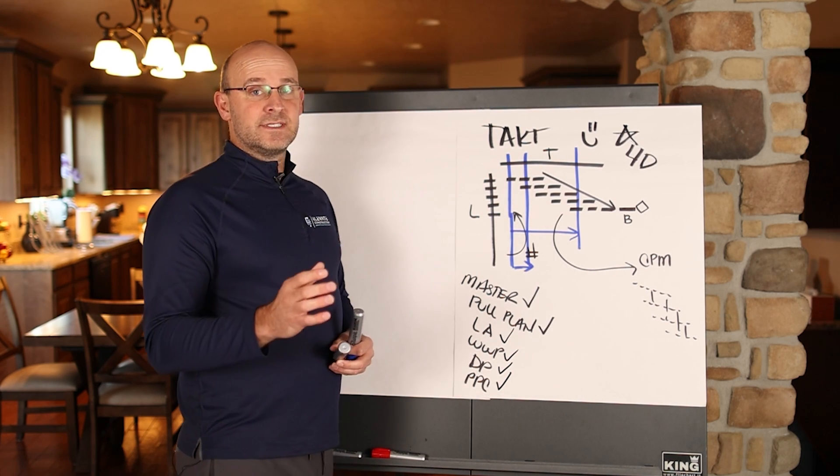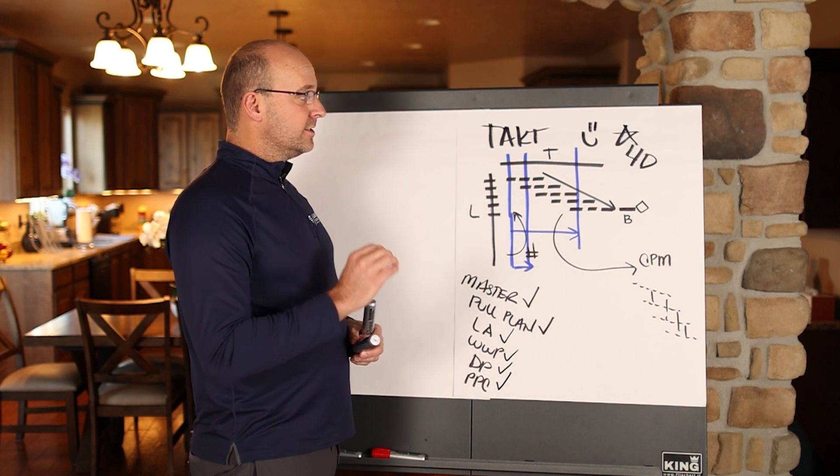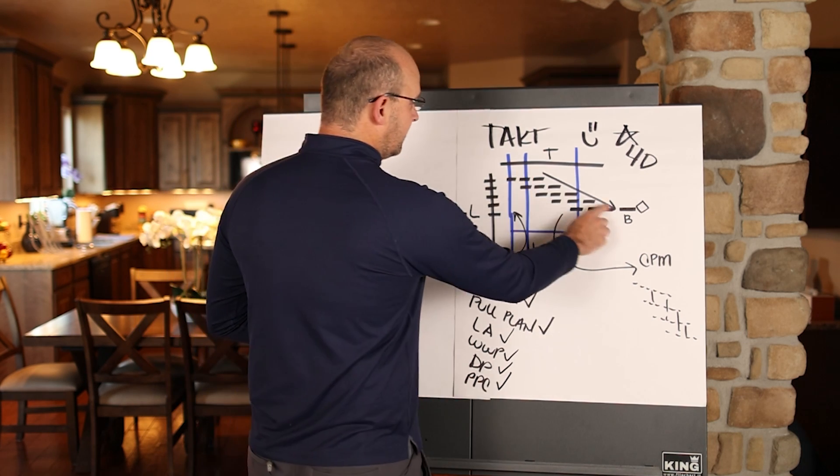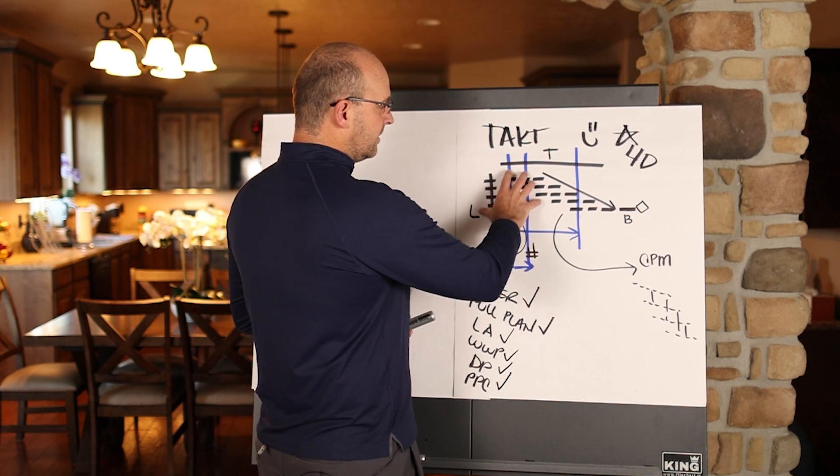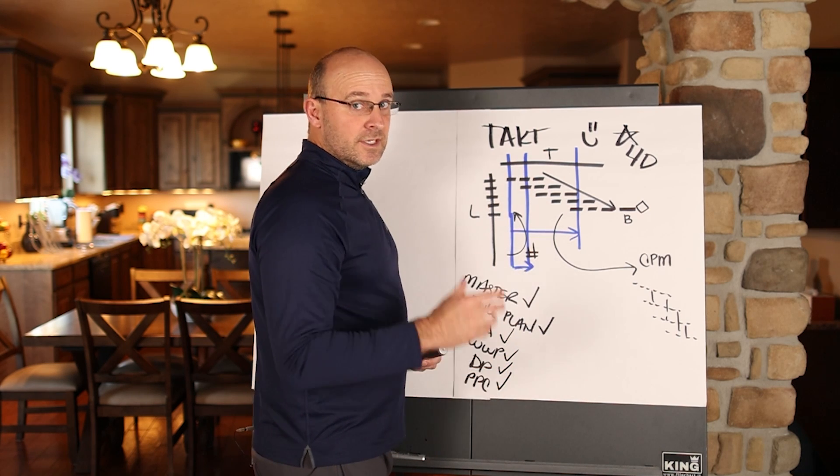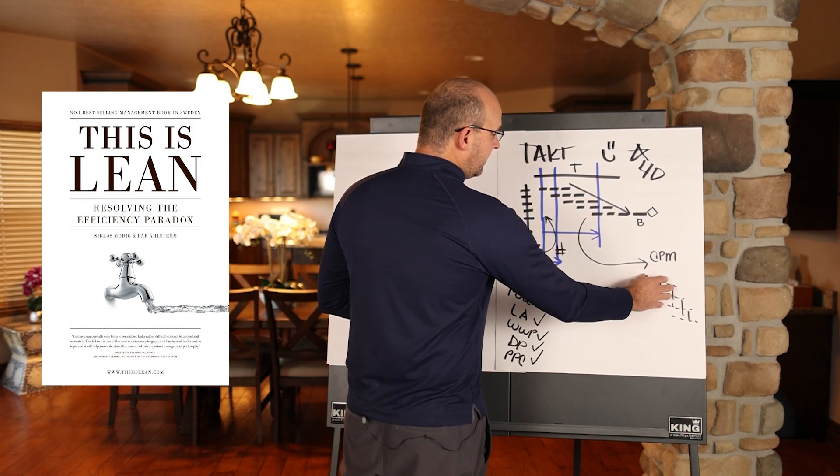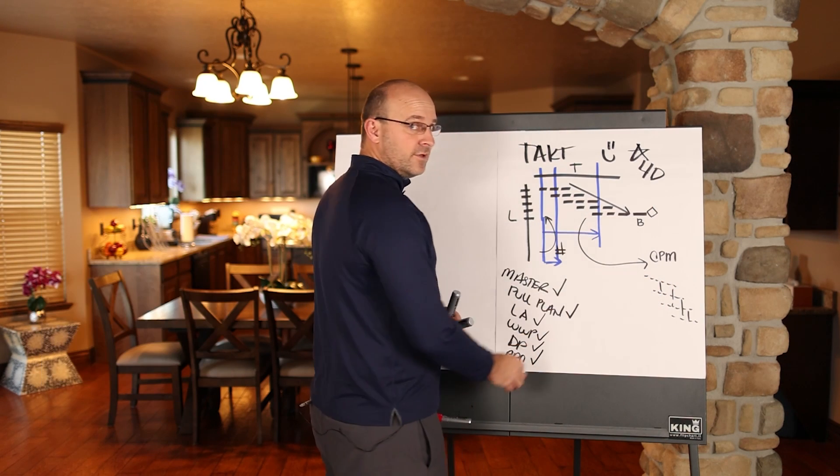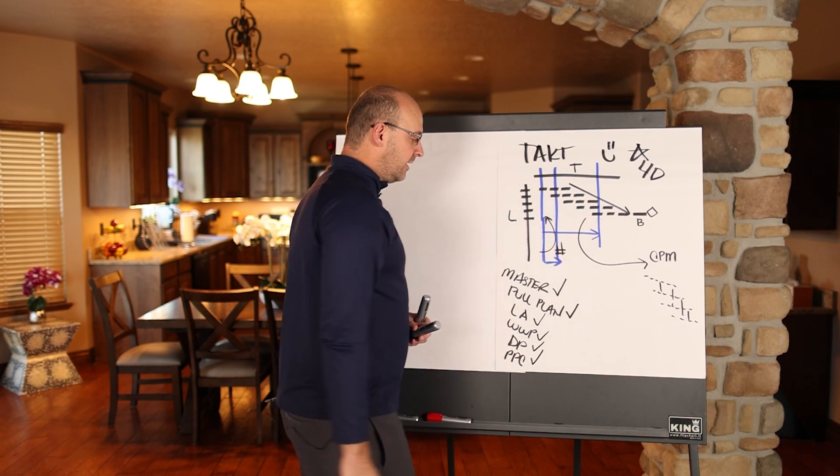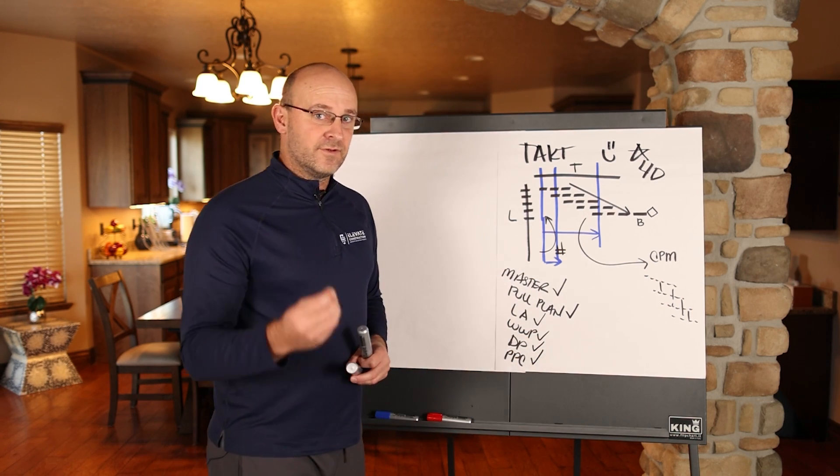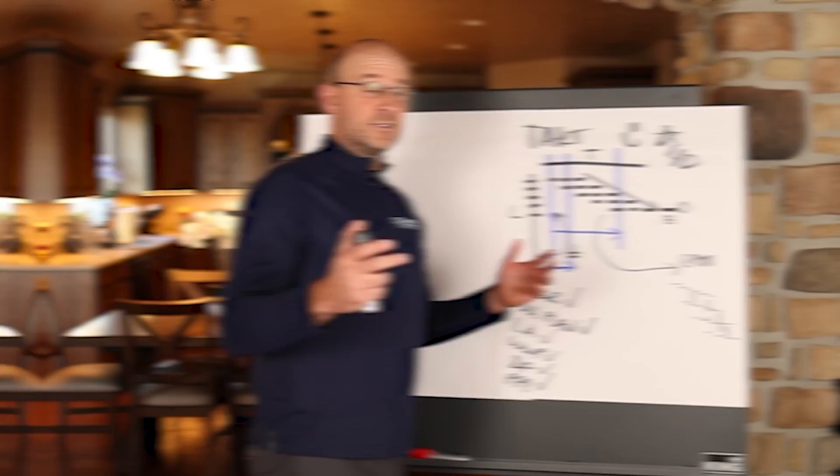So if somebody said, hey, J Money, these are all the different scheduling types. What should I do? I would use takt because you have line of balance, location-based scheduling, ideal flow, just like Nicholas Modig talks in his book, this is lean. You have the CPM export, you have buffers for the project team, and you're able to optimize and go fast. And all of your last planner deliverables filter directly from that. So to me, like this is so cool. You can use this starting tomorrow.